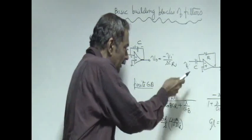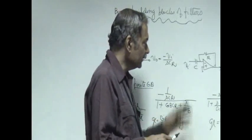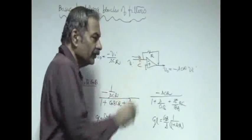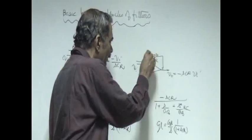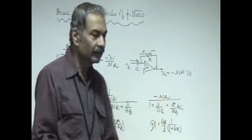Here the R and C are interchanged, then the operation gets interchanged. V_i is driving a current in this which is V_i by R into sC, and that current flows through this R and develops a voltage which is minus sCR into V_i, and therefore it is differentiated.